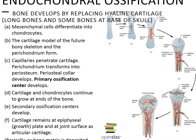The next step in the process is the formation of the medullary cavity. As the primary ossification center enlarges, osteoclasts break down newly formed spongy bone, which opens up a medullary cavity in the center of the diaphysis. The osseous tissue of the outer shaft then becomes thicker, forming compact bone.